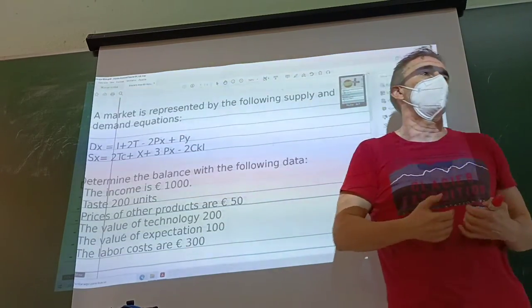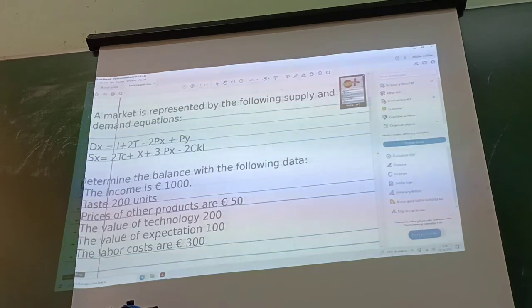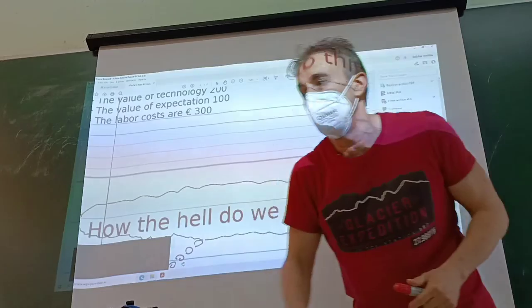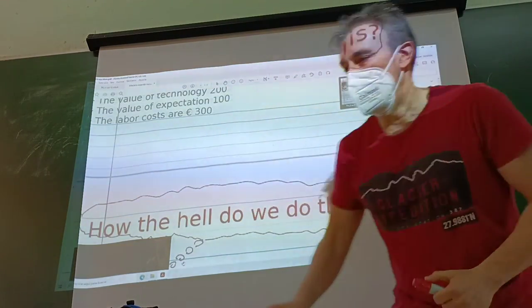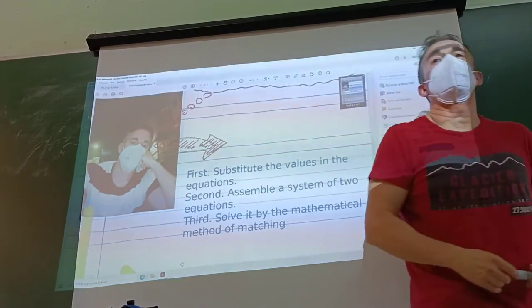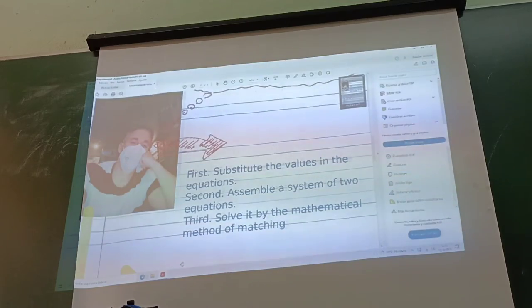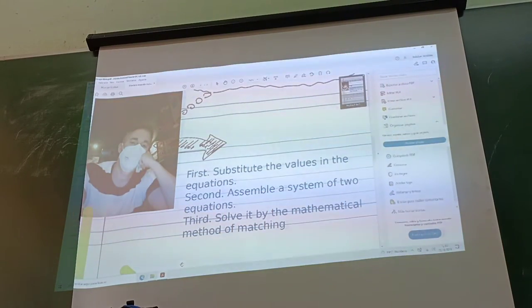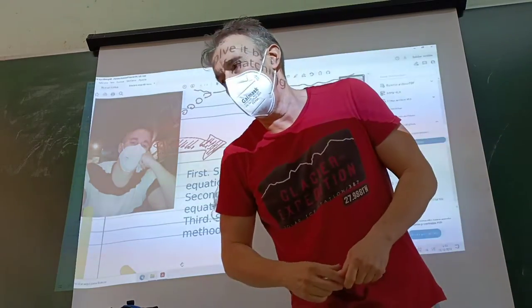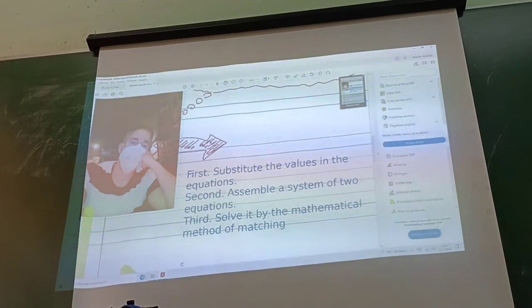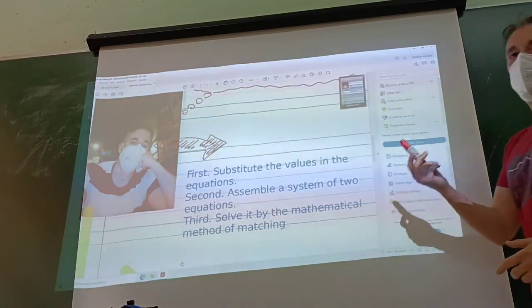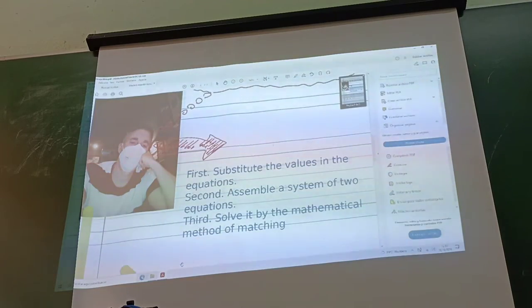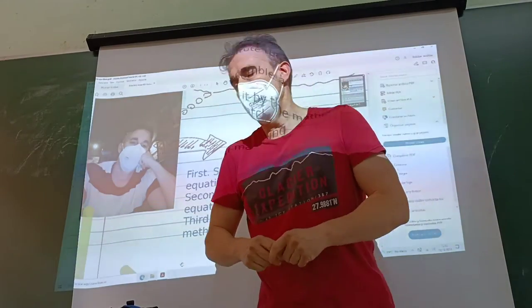When we have this data, first of all we have a problem: how do we combine two equations? The steps are: first, substitute the values in the equations; second, assemble a system of two equations; and last, solve it by the mathematical method of elimination. Remember, in the first class I told you that we use simple mathematics to explain all of economics.